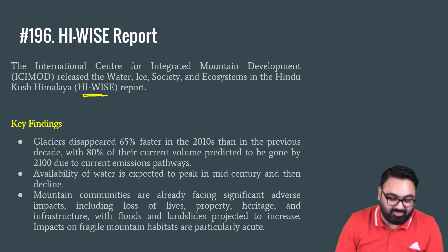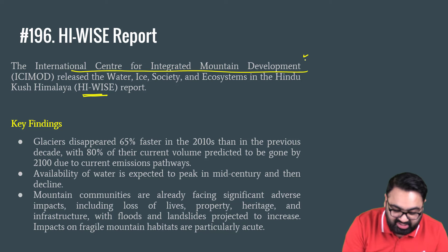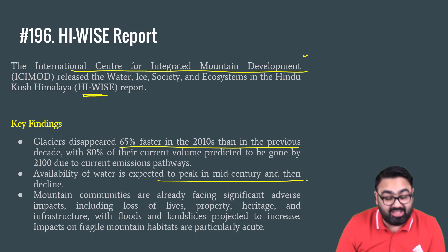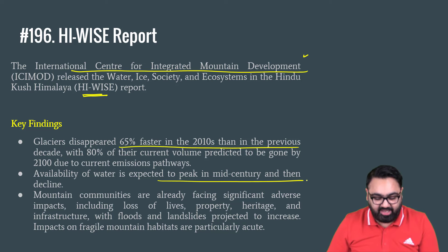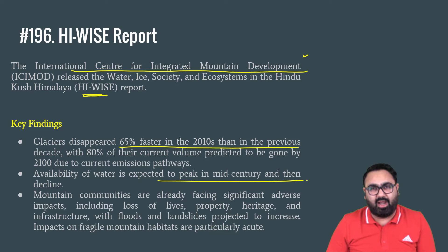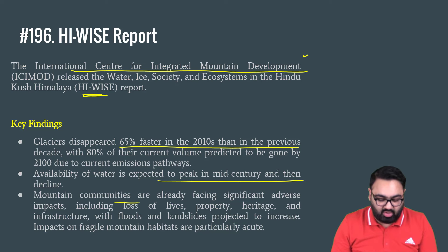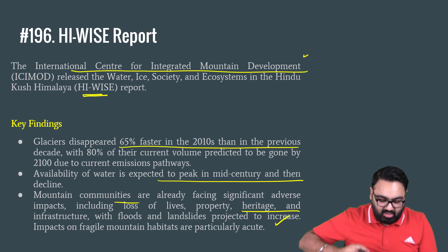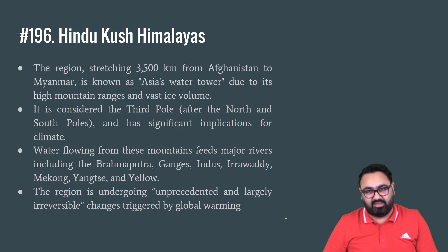The High Ice Report is published by the International Centre for Integrated Mountain Development (ICIMOD). Key findings: glaciers disappeared 65% faster in the 2010s than in the previous decade. Availability of water will peak in the middle of the century — around 2050 — and then start to decline. This will have a major impact on populations, especially mountain communities that depend on this water source for their livelihood, property, heritage, and infrastructure. The mountain habitat is extremely delicate and cannot withstand significant changes.